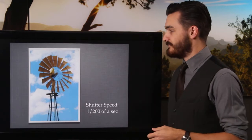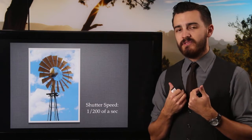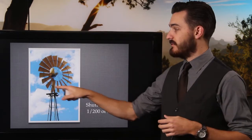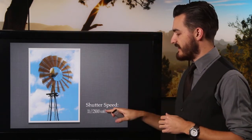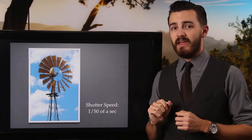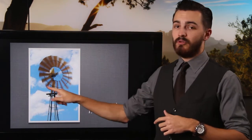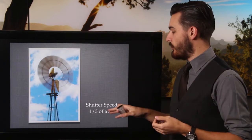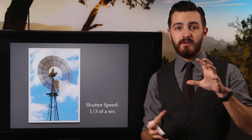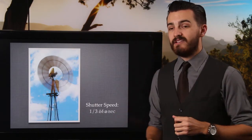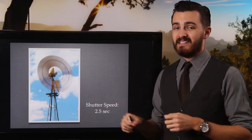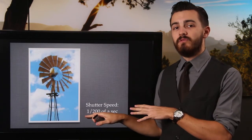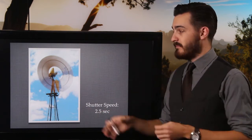Here's a windmill spinning around while I'm on a tripod. At one two-hundredth of a second, that's fast enough to freeze the blades. Slowing down to one fiftieth, we start to get a little blur around the edges. At one thirteenth, we get a lot more blur as the blades have more time to move. At one third of a second, even more blur. And slowing all the way down to two and a half seconds, we get a lot of blur — it looks like it's going really fast. Going from one two-hundredth to two and a half seconds, we get a much longer shutter speed and much more pronounced blur.